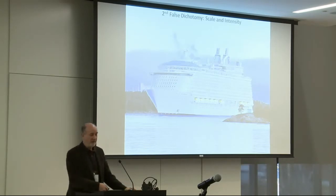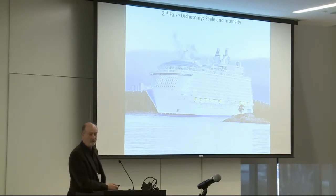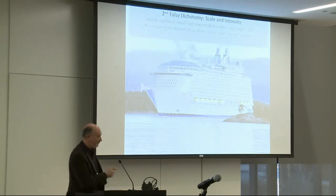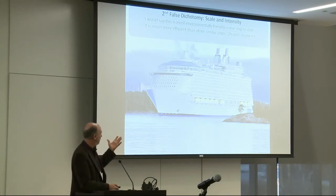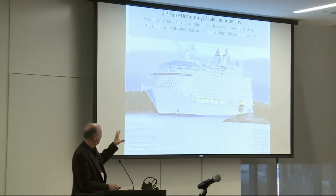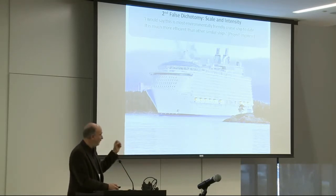The second false dichotomy is between scale and intensity. This is a picture of the world's largest cruise ship. The company describes it as the most environmentally friendly cruise ship to date — much more efficient than other similar ships. What they're looking at is energy per person if the ship was filled. But when this ship arrives at a small Caribbean island and thousands of passengers plus crew get off, it's not very friendly to the environment at all. It's an example of what happens if you think about environmental friendliness only in terms of efficiency and not in terms of scale.